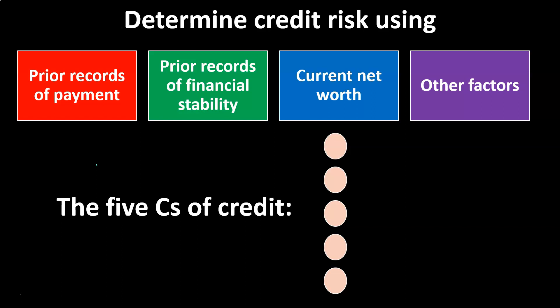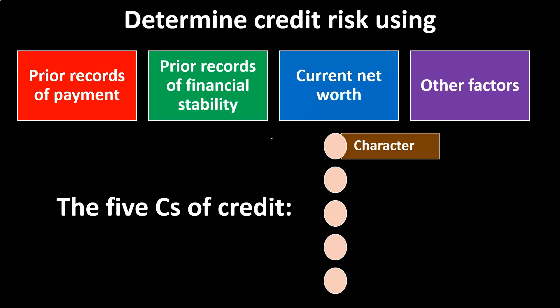We can look at prior records — have they paid in the past? We can look at credit scores, prior records of financial stability, whether they've gone bankrupt before, and whether they have financial stability. We also consider net worth: how much do they have in assets over liabilities — their balance sheet, in essence. If we're dealing with someone that has a solid balance sheet, we're probably in a stronger position to expect that we're going to get paid.